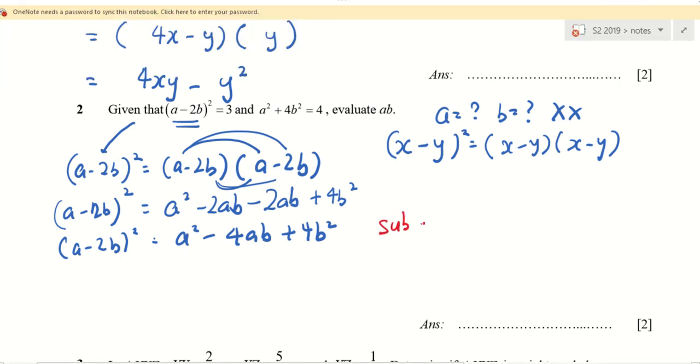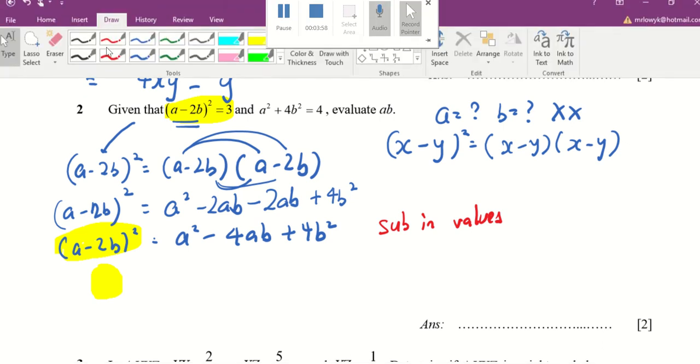Now, what values am I talking about? You may want to highlight A minus 2B square. The entire thing is what number? Three. So which means I can put in the value here, three. Do you follow?